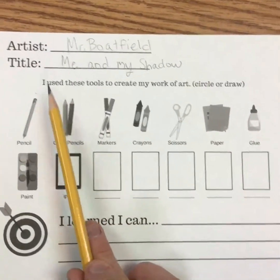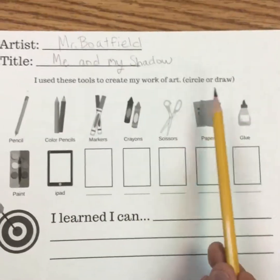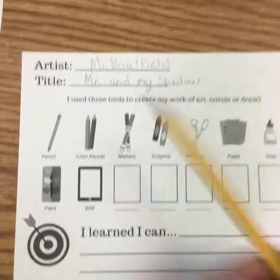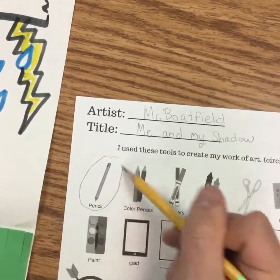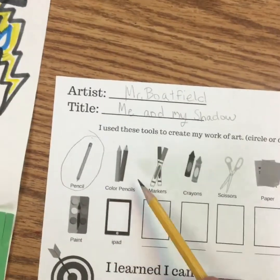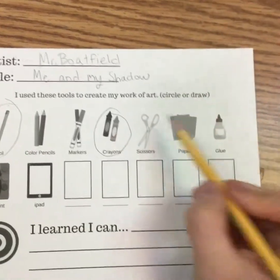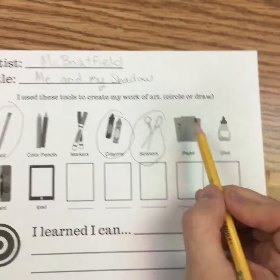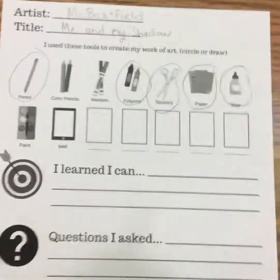The next part says 'I use these tools to create my work of art,' and all you have to do is circle the ones we used. Do we use a pencil for this artwork? We're using a pencil right now, so yes. You had the option of colored pencils — if you used those, circle that. I use crayons. We definitely used scissors. We definitely used paper. And we used glue. The next ones are paint and iPad, and we did not use those for this project, so you don't need to circle them.